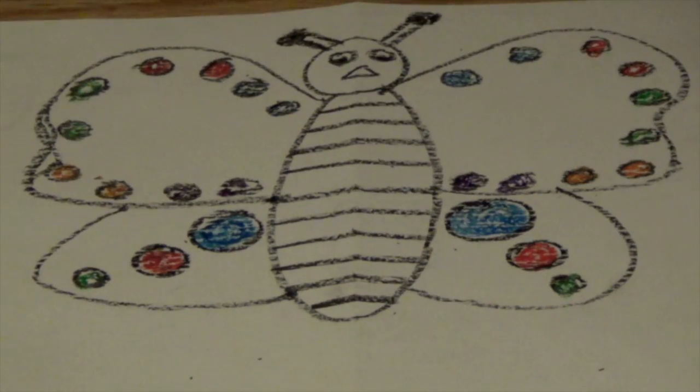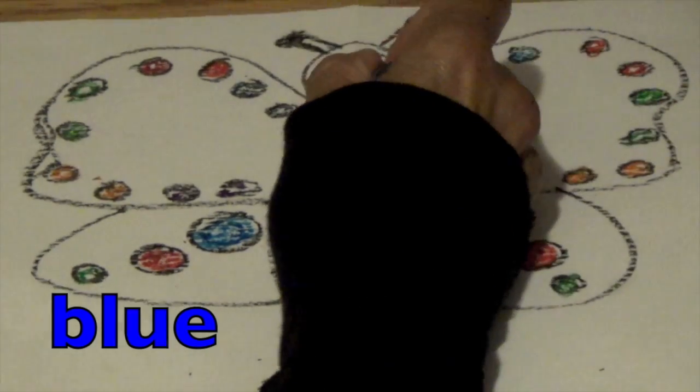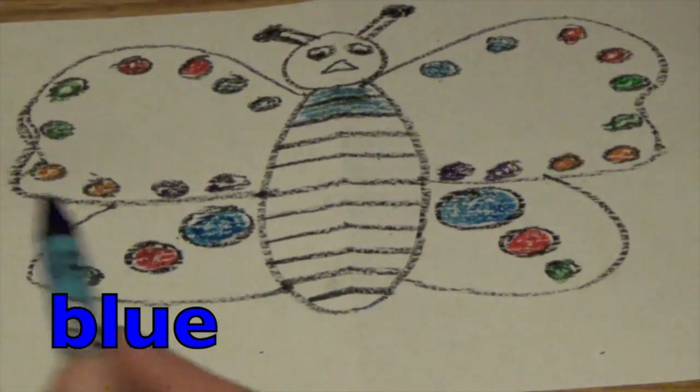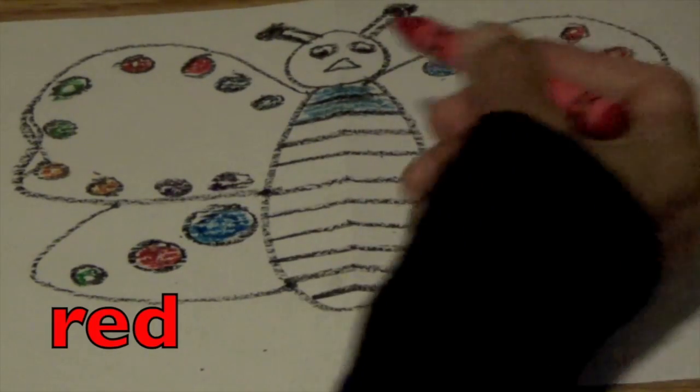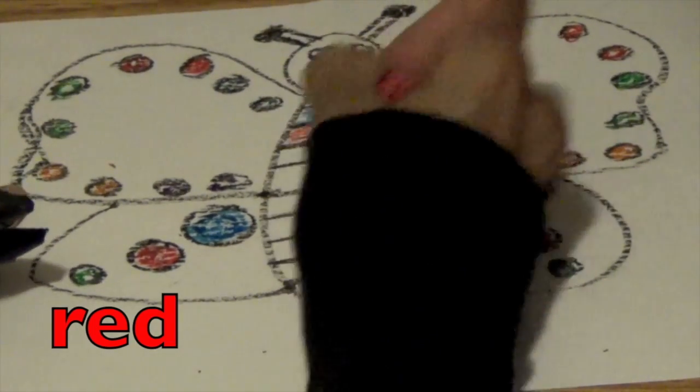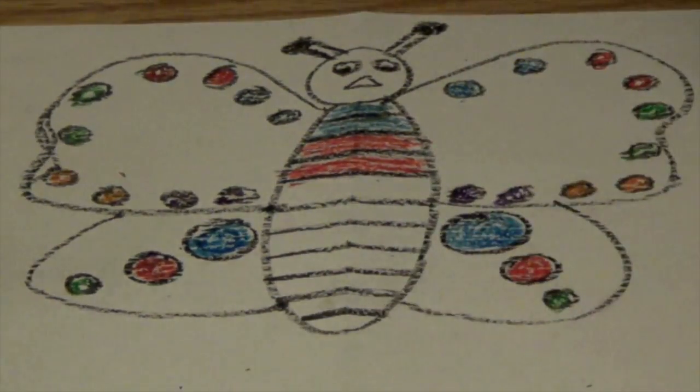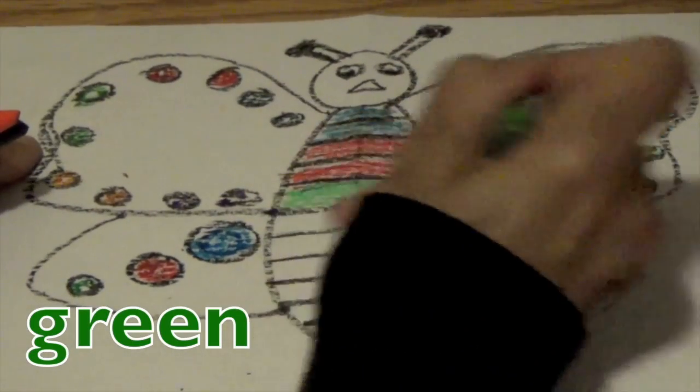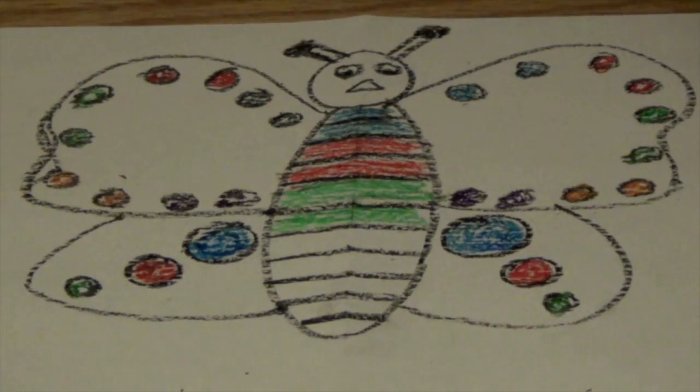So we're going to go back in our pattern. We want to get our blue because our first color is blue. So we're going to color in two parts here blue. Now what is the next color? The next color is red. See the red here? We're coloring two reds. And what's our next color? It is green. Color in two green.